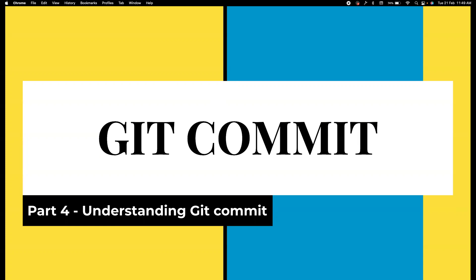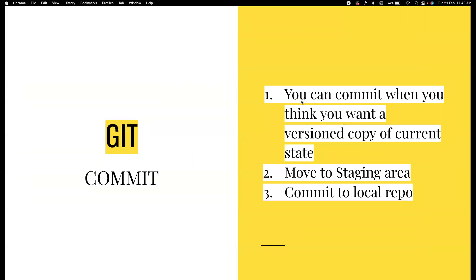So now to understand what is a Git commit, you can imagine that you commit your code or your project when you think you have a meaningful state for your system. For example, let's say you have a file that is now in a meaningful state, and you want to have this version — you want to version the state of this particular project — then you can commit the code.